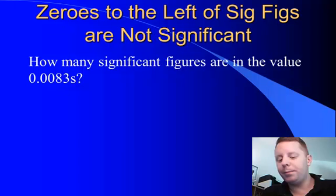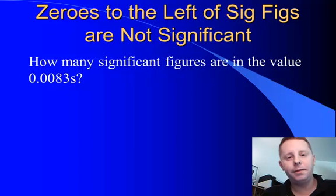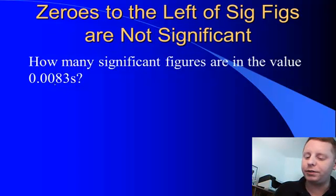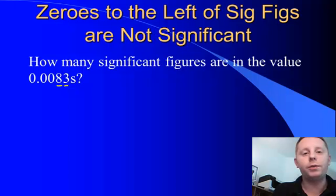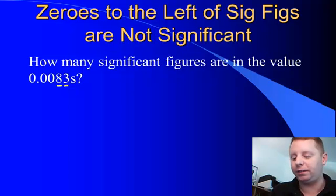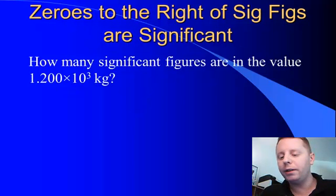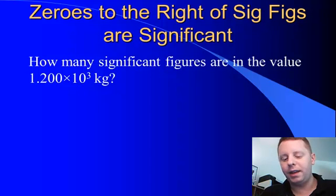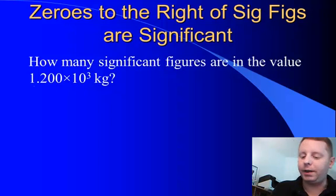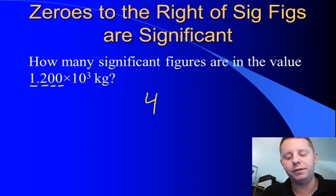If we look at a number like 0.0083 seconds, how many significant figures do we have? Well, you have to remember that zeros to the left of any sig figs don't count — they are not significant — so we have two significant figures here. And for our last example, written in scientific notation, any zeros to the right of significant figures are significant, so we have one, two, three, four sig figs in 1.200 times 10 to the third kilograms.